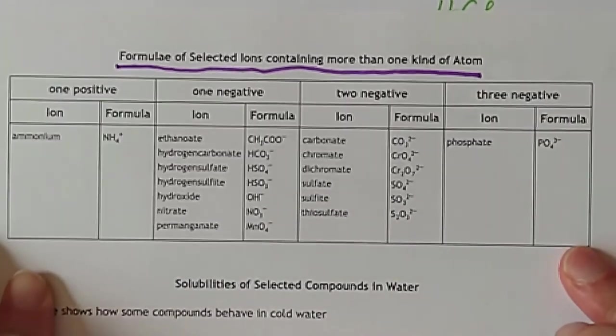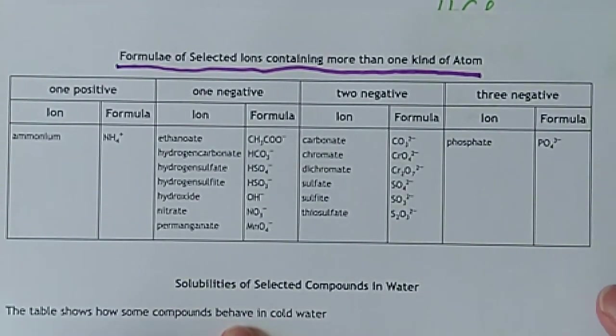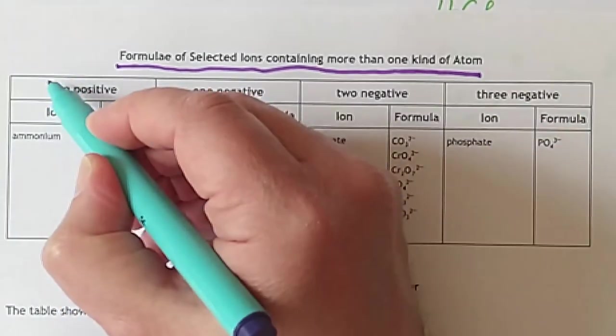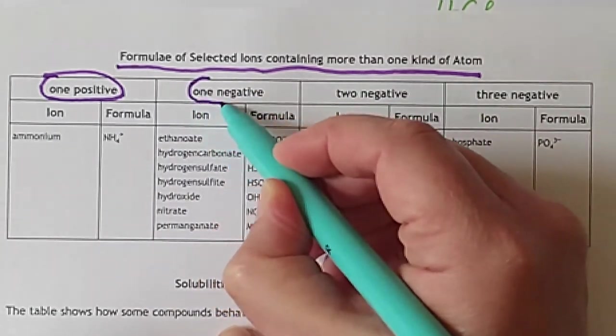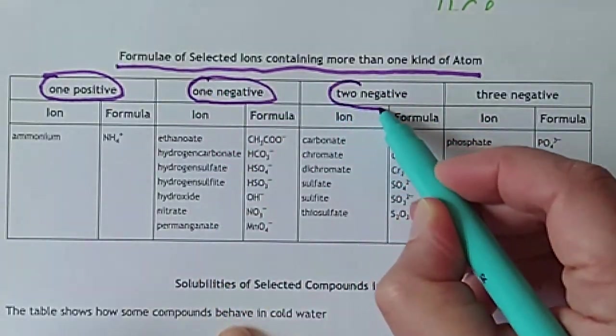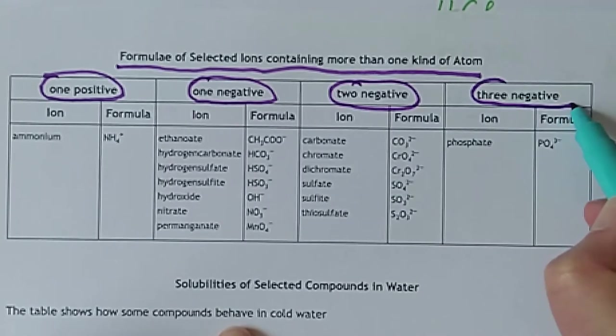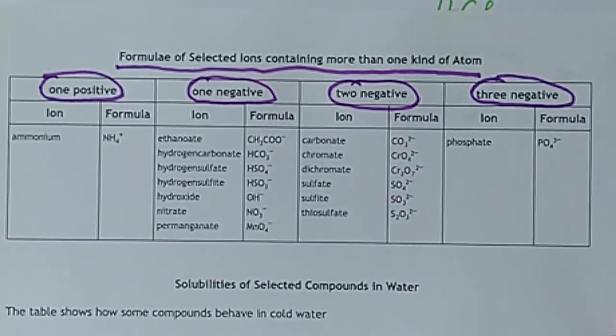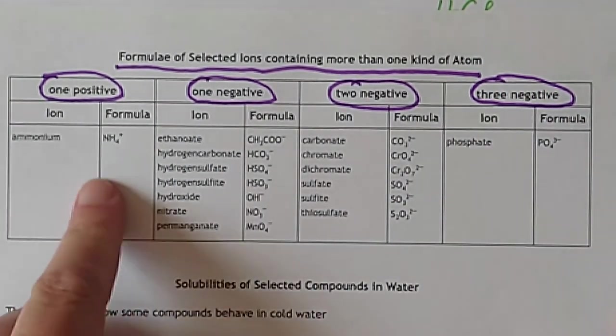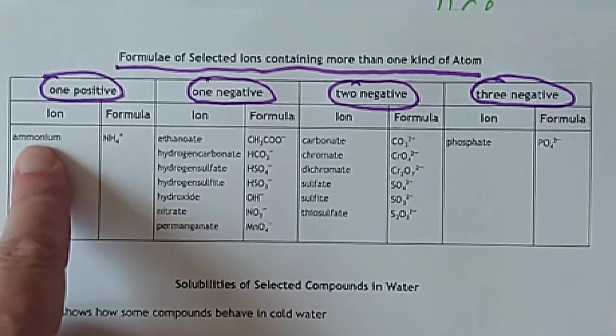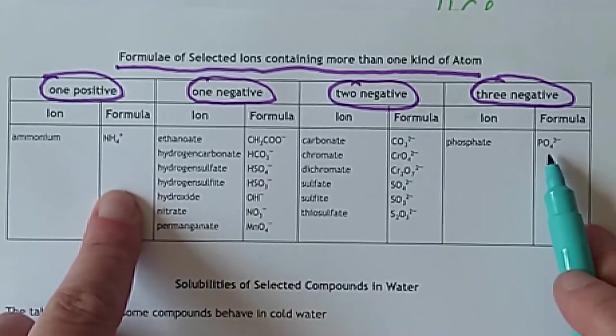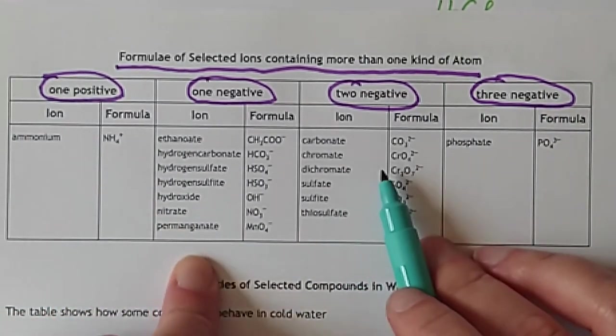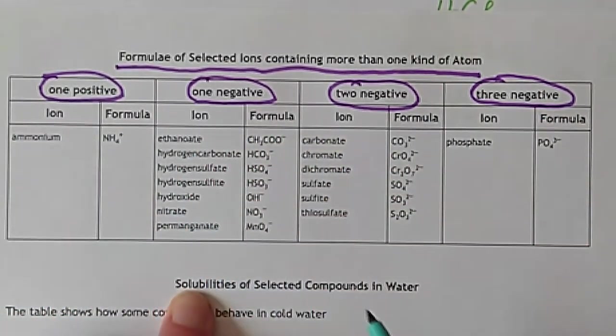Okay, I've zoomed in on this table here which the SQA gives the catchy title of: Formula of selected ions containing more than one kind of atom. You could call it that or you can call them complex ions. You take your pick. It's all good. Now if we have a look at this table for a second, there seems to be quite a lot going on in it. There is, first of all, they show the charge on these complex ions and they've divided them into four columns depending on the charge this particular ion has got.